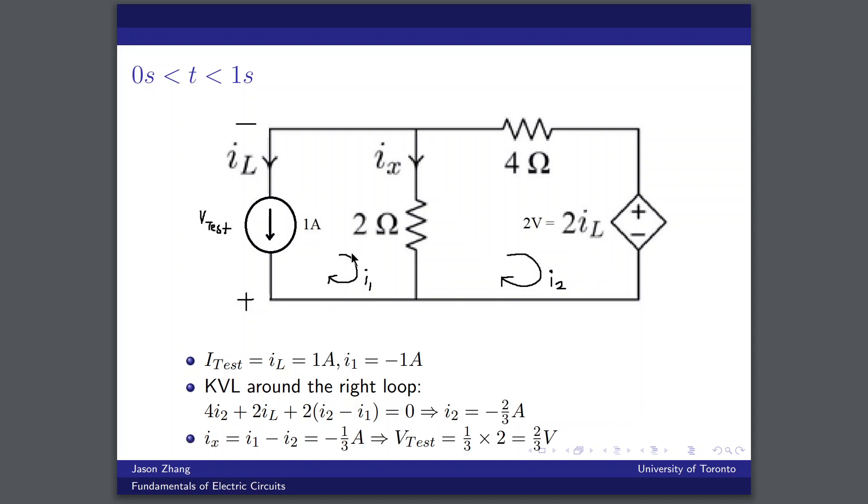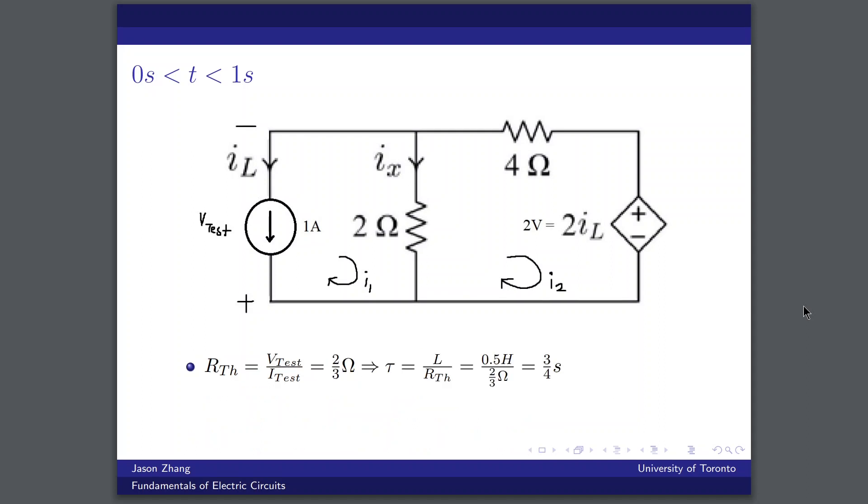If we use KVL around the right loop, we can solve for I2, which will give us minus two over three amps. And then using I2 and our value for I1, which is just minus one amp, we can find Ix, which is the current traveling through the two-ohm resistor, and is equal to minus one over three amps. Using this information, we can then calculate the voltage difference across our test source, and that's equal to two over three volts. And then we can find the Thevenin resistance, which is the voltage across the test source divided by the current provided by the test source, which is just two over three ohms. Using the fact that our time constant is equal to the inductance of the inductor divided by the Thevenin resistance, we then get that our time constant is three over four seconds.